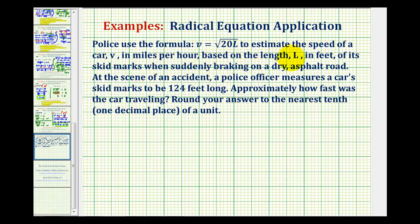based upon the length L in feet of its skid marks when suddenly braking on a dry asphalt road. At the scene of an accident, a police officer measures a car's skid marks to be 124 feet long. Approximately how fast was the car traveling? We want to round our answer to the nearest tenth.